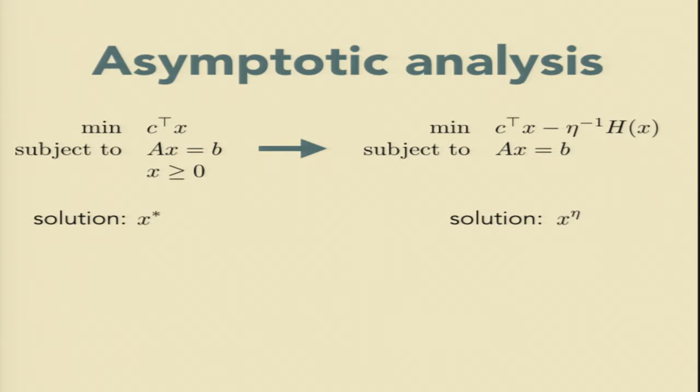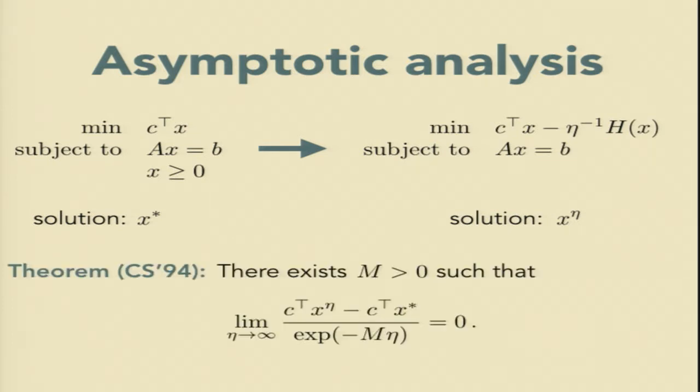look at any linear program at all and consider replacing it with its penalized counterpart. You have this new solution, x eta, and you want to ask how quickly it approaches x star. And Cominetti and San Martin showed that this asymptotic result held that there's some m greater than zero, such that the gap between the quality of the penalized program and the quality of the true optimum goes to zero faster than e to the negative m eta.